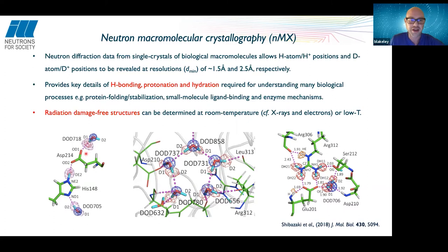Here are some nice examples of neutron data from BIODIFF — very nice maps of a protein kinase where you can see the protonation state of the histidine residue, the orientation of water molecules including a pentamer of water molecules, and the protonation states of an arginine residue.